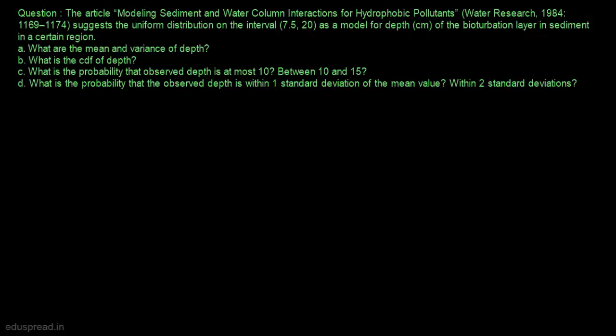In this lecture, I am going to solve this question. The article modeling sediment and water column interactions for hydrophobic pollutants suggests the uniform distribution on this interval as a model for depth of the bioturbation layer in sediment in a certain region. In part A, we have to find the mean and variance of depth.